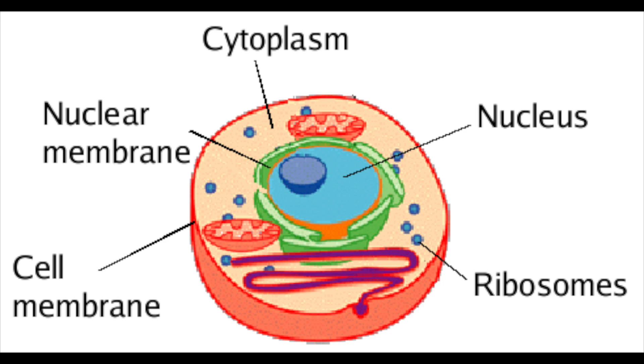For example, in something like a sperm cell you'd have a lot of mitochondria because it helps the cell move better.